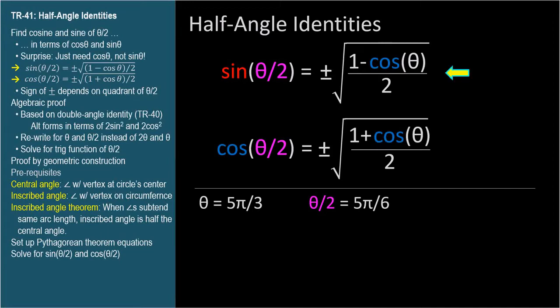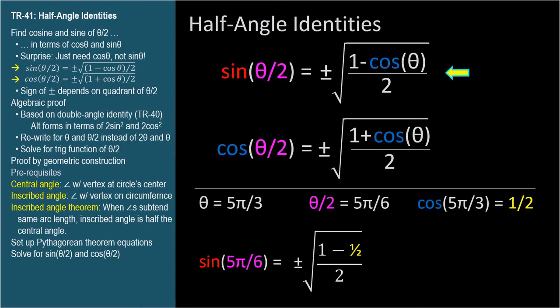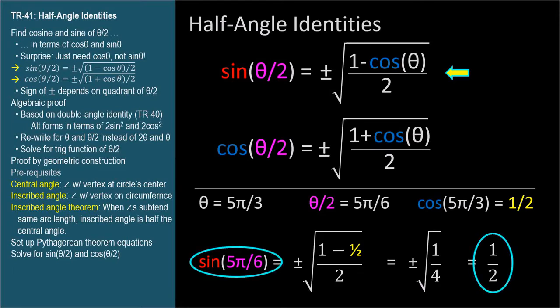For sine: sine theta over 2 equals plus or minus the square root of 1 minus cosine theta divided by 2. Cosine of 5π over 3 equals 1 half. So 1 minus 1 half equals 1 half, divided by 2 gives 1 fourth, and the square root of 1 fourth is plus or minus 1 half. We use the positive value since we expect the sine of 5π over 6 to be positive. Using just the cosine of 5π over 3, we found the sine of 5π over 6.